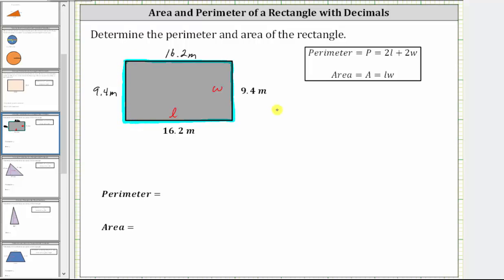So again, the perimeter P is equal to 16.2 plus 9.4 plus 16.2 plus 9.4. To determine the sum though, it'll be easier to write the sum vertically, lining up the corresponding place values.